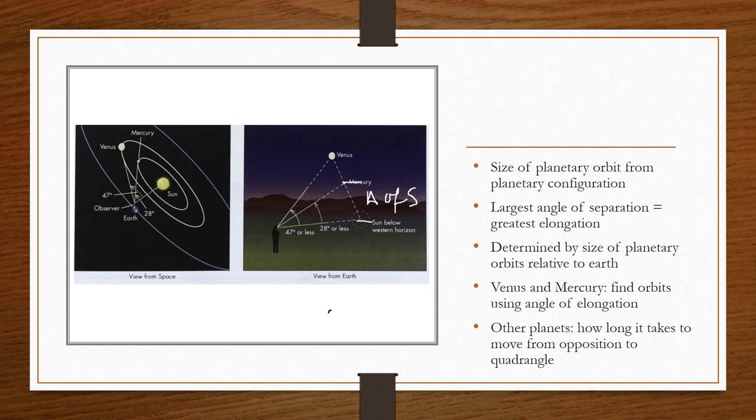Remember, in that image earlier, you had Earth, planet, planet, planet. This was opposition. This was quadrangle. The amount of time it takes to move from opposition to the quadrangle allows you to determine the size of the orbit. You couldn't determine the Earth's actual distance from the sun, so he labeled the distance as one astronomical unit. So if Jupiter was five times the distance, then it would be five astronomical units. And it was pretty spot on. To this day, we call the distance from the sun to the Earth one astronomical unit.